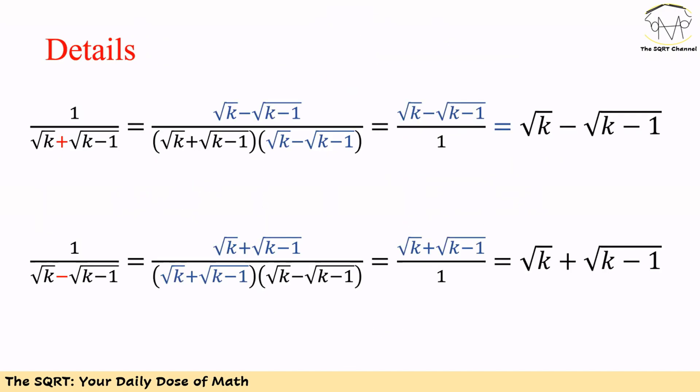To show why we could convert the expression into a telescoping series, I'm going to add more details here. We showed that 1 over (√k + √(k-1)) is equal to √k minus √(k-1). You can prove it by first multiplying both top and bottom of the expression by √k minus √(k-1). Then the denominator simplifies to 1 and you get your answer.